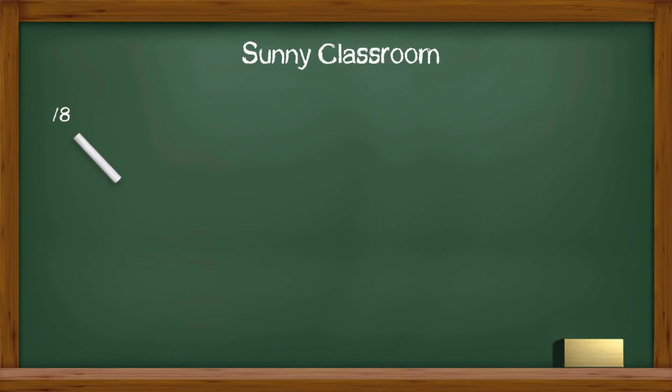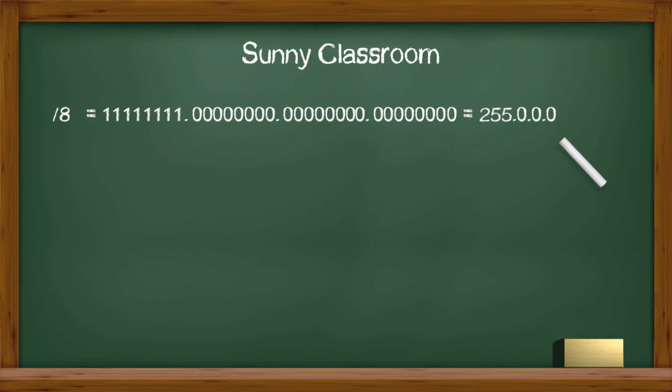Slash 8 in shorthand means the subnet mask has 8 ones followed by 24 zeros. And in decimal format, it is 255.0.0.0. Slash 16 in shorthand means the subnet mask has 16 ones followed by zeros. And in decimal value, it is 255.255.0.0.